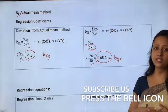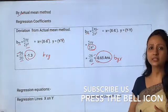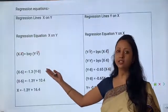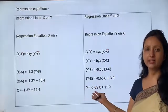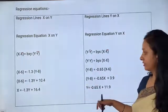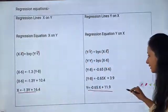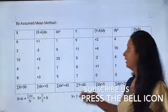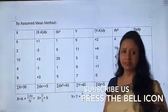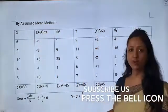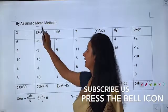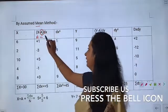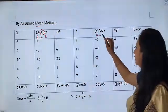So never get confused — you can use whichever method is suitable. The regression equations from the actual mean method are the same as those found in the original value method. Now we will solve the same question using the assumed mean method. Here we assume a=5 for x and a=7 for y.